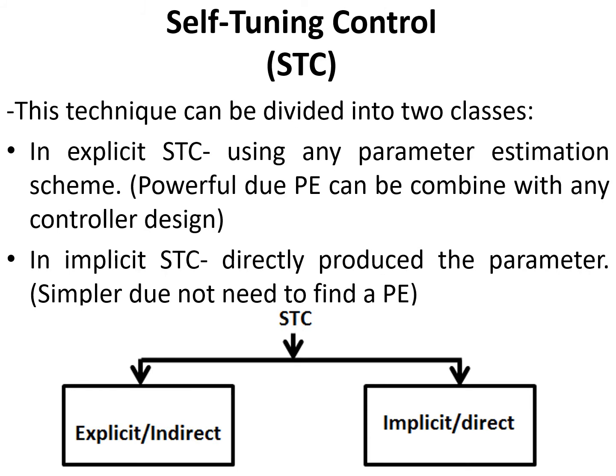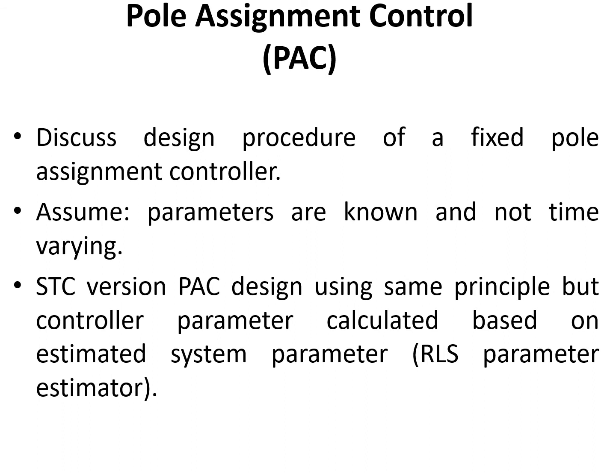The self-tuning controller technique can be divided into two classes. Class number one: explicit or indirect STC, and class number two: implicit or direct STC. In explicit STC, process parameters are identified using any parameter estimation scheme. It is powerful because the parameter estimation can be combined with any controller design. However, it is quite complicated compared to implicit STC. In implicit STC, it directly produces the controller coefficients and is simpler as it does not require defining a parameter estimation. In this section, a type of explicit STC design method is discussed.